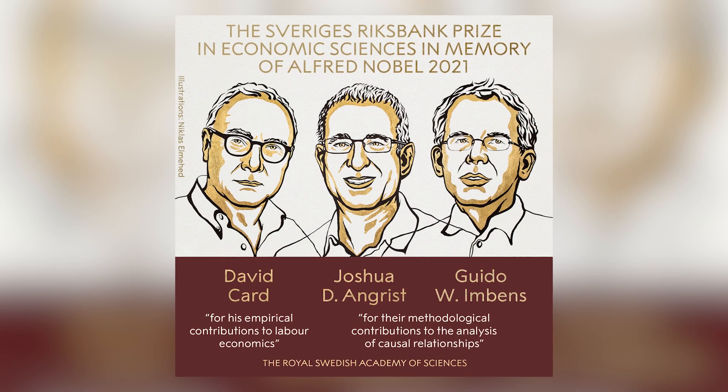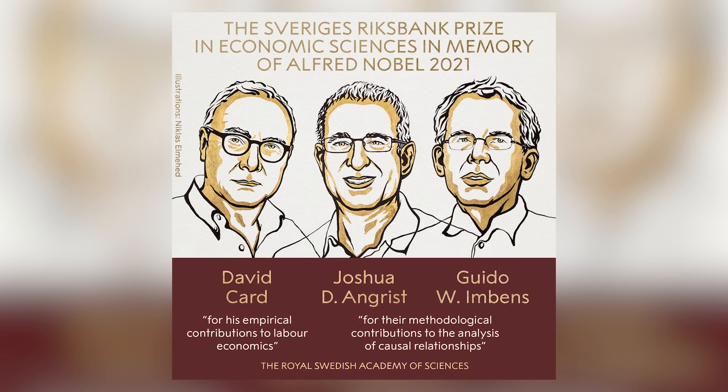In 2021, Card, Angrist, and Imbens received the Nobel Prize in recognition of their contributions to the credibility revolution. This seems to have cemented the reduced-form camp's victory, but also perhaps marked the end of the war by institutionalizing their approaches.